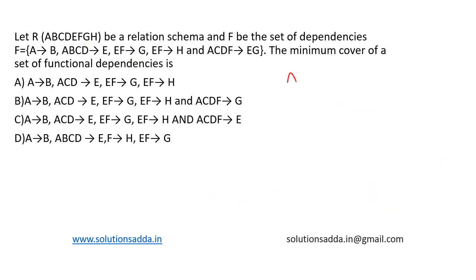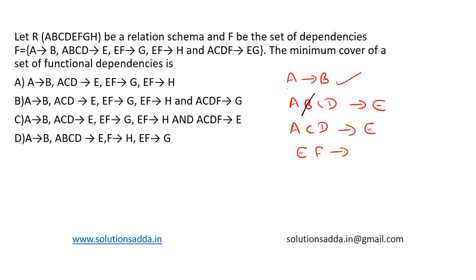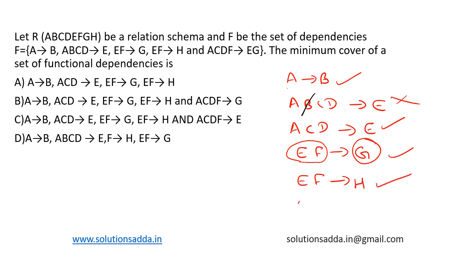First, A determines B — this has only one attribute on the RHS and is irreducible, so it is required. Next, ABCD determines E: since A can determine B, B is extraneous on the LHS, so it can be removed, giving us ACD determines E. Next, EF determines G — this has only one attribute on the RHS and no extra attributes on the LHS, so it is required. Similarly, EF determines H also follows the same principle and is required.